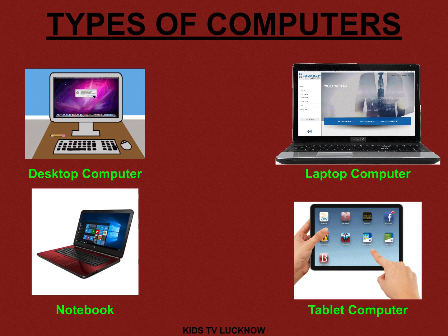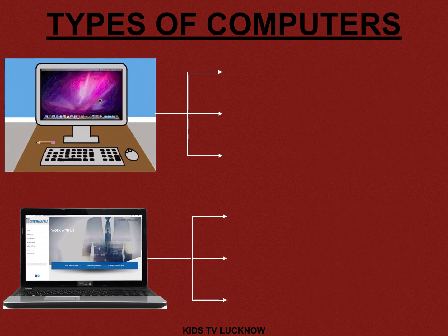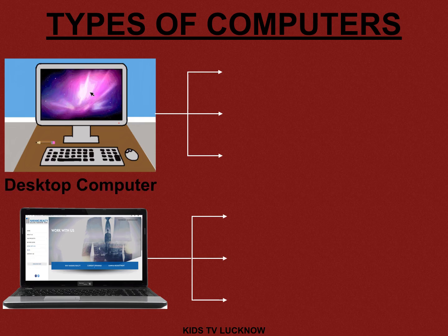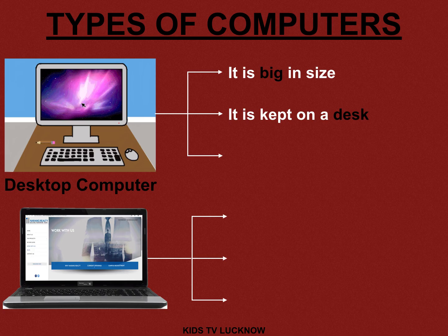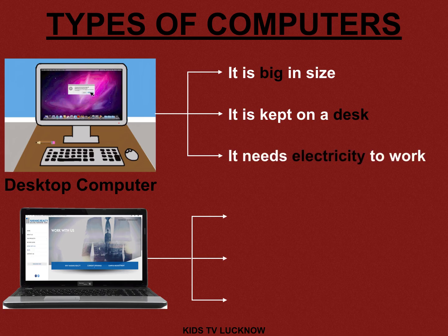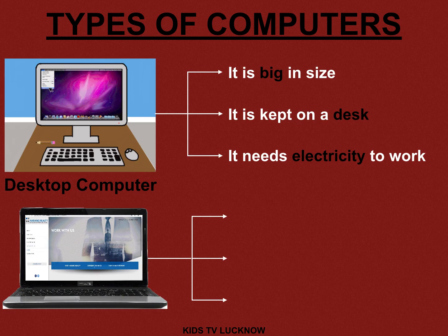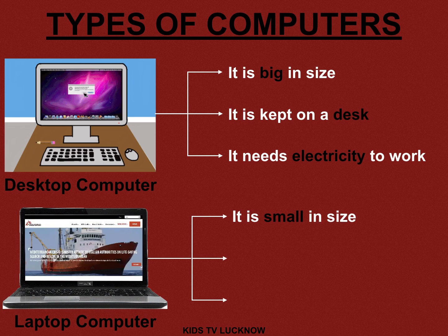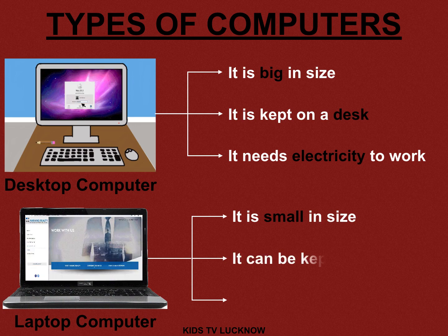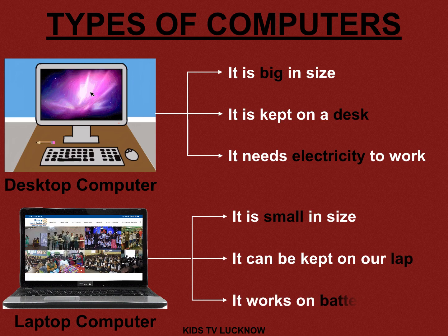Let us discuss these computers in detail. The first computer is the desktop computer. It is big in size — as you can see, it is very big. It is kept on a desk or table. It needs electricity to work. You must have seen that it works on electricity. The next one is the laptop computer. It is smaller in size compared to the desktop computer. It can be kept on a desk and it works on batteries.